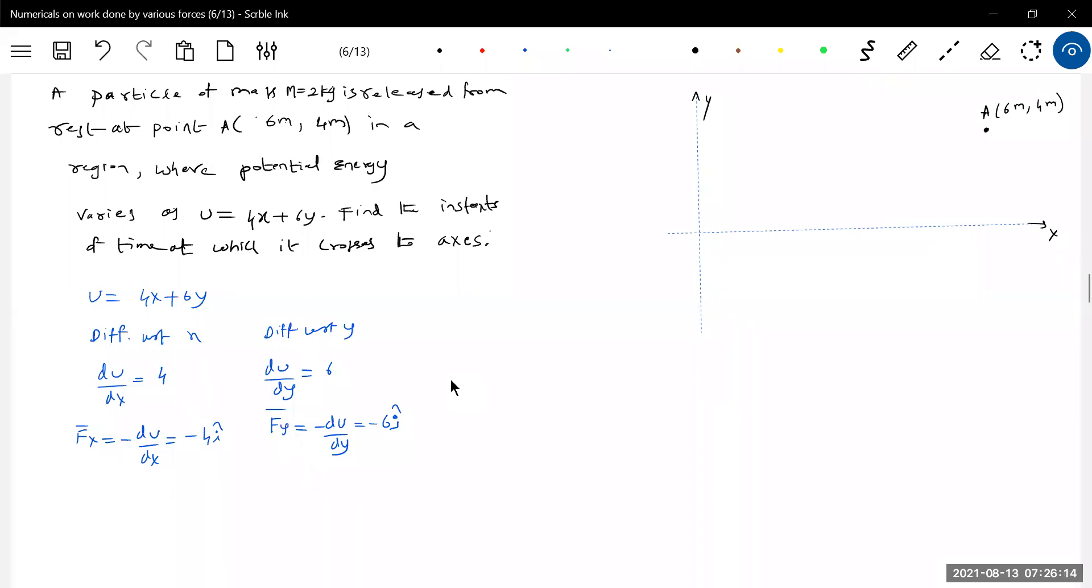These Fx and Fy are conservative forces. The total force acting on the particle is F = Fx + Fy = -4 i cap - 6 j cap. This particle will experience an x component of force and a y component of force.